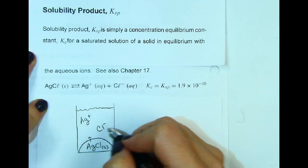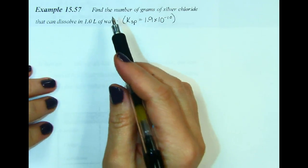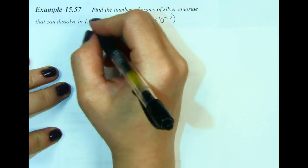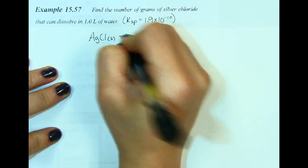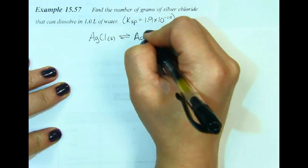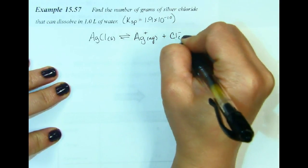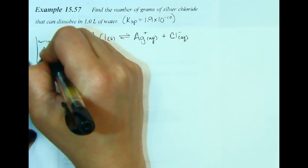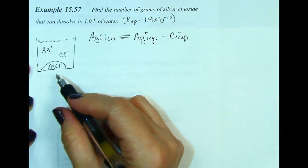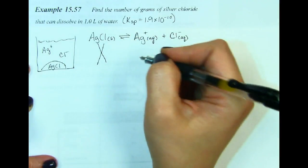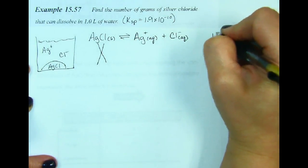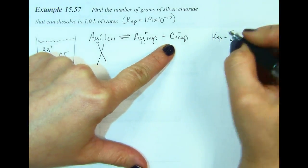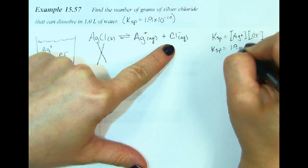Ksp tells us to what degree the solid dissolves. We can solve these equations for the concentrations of ions. We're going to find the number of grams of silver chloride that can dissolve in one liter of water with this Ksp value. Silver chloride solid yields silver plus ions aqueous and chloride minus ions aqueous. Since solids are not included in an equilibrium expression, Ksp equals the concentration of silver ions times the concentration of chloride ions. The Ksp is 1.9 times 10 to the negative 10.